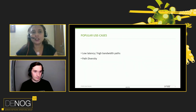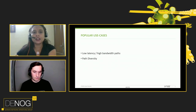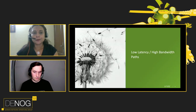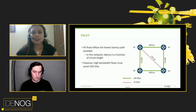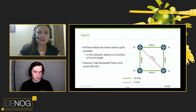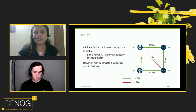Let us see what are the popular use cases where Flex Algo can be used. The first one we will look at is low latency and high bandwidth paths. Let's take a use case here with R1, R2, R3, and R4.